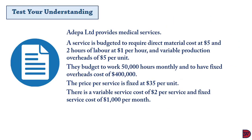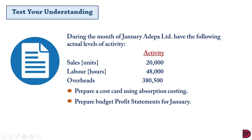Let's test understanding again. The Part Limited provides medical services. A service is budgeted to require direct material costs of five dollars, two hours of labor at one dollar per hour, and variable production overheads of five dollars per unit. The budget is to work fifty thousand hours monthly with fixed overhead cost of four hundred thousand dollars. The price per service is thirty-five dollars, with a variable service cost of two dollars and fixed service cost of one thousand dollars per month. In January, actual sales units are twenty thousand, actual labor hours are forty-eight thousand, and actual overhead is three hundred and eighty thousand five hundred dollars.